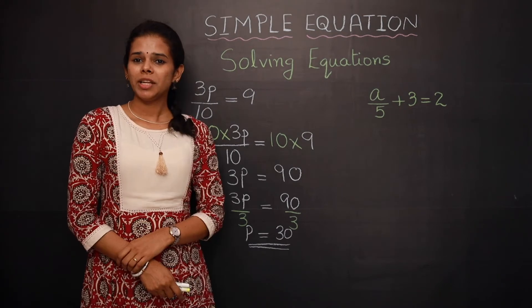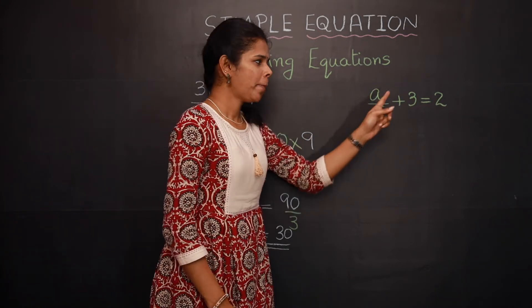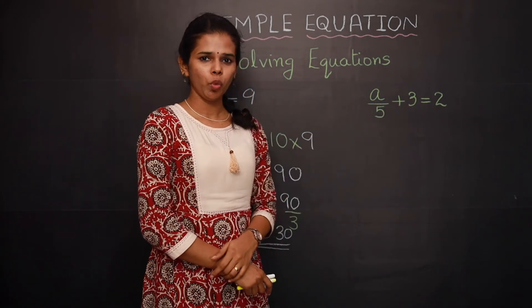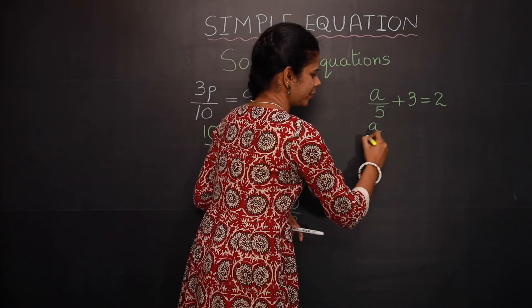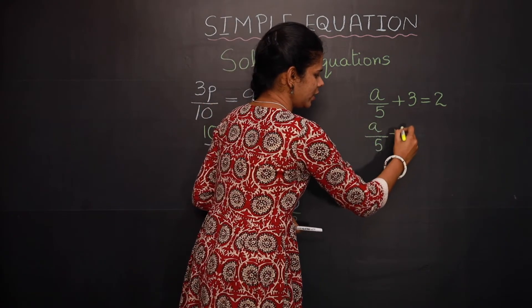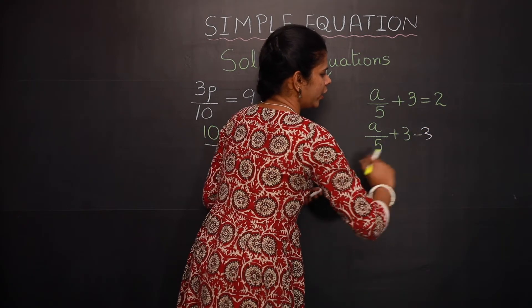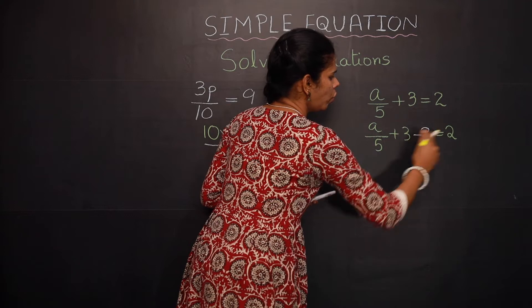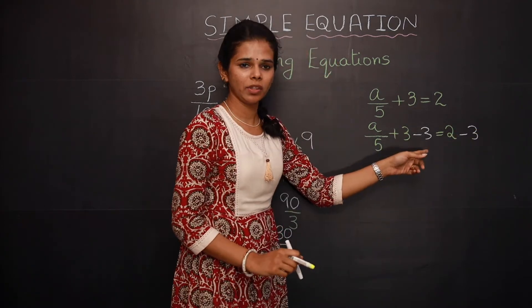Now let's move on to the next example: a by 5 plus 3. So a by 5 plus 3 minus 3 equal to 2 minus 3. So here positive 3 and negative 3 gets cancelled.